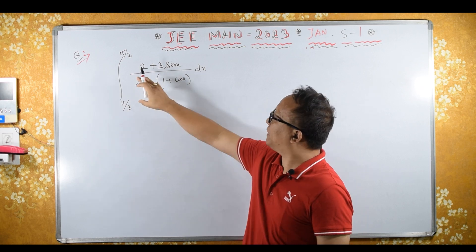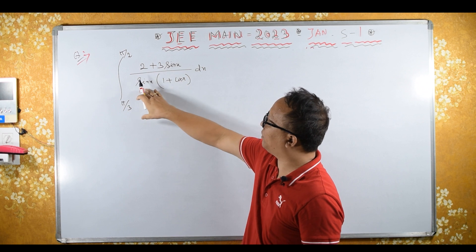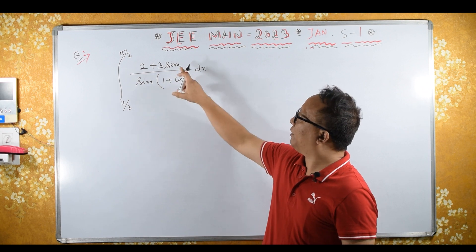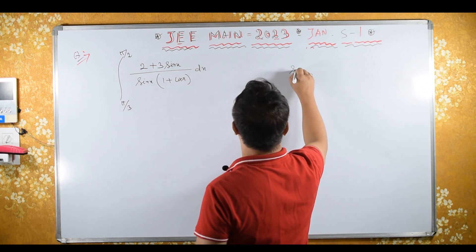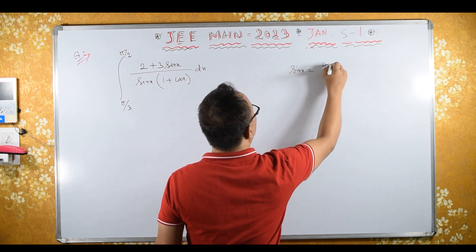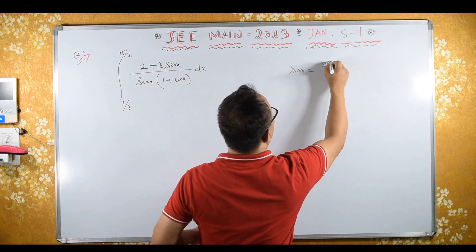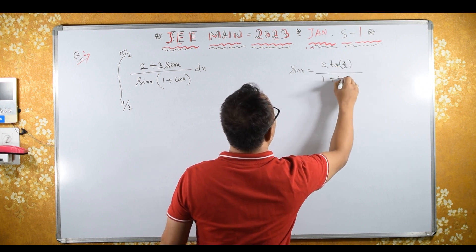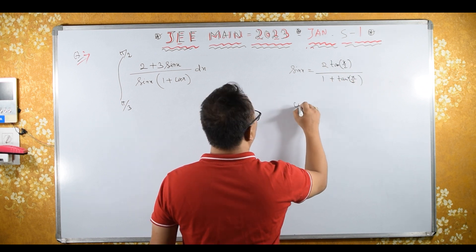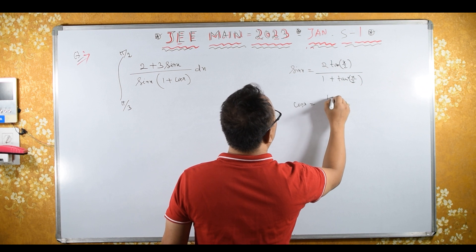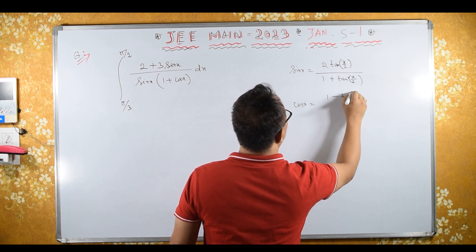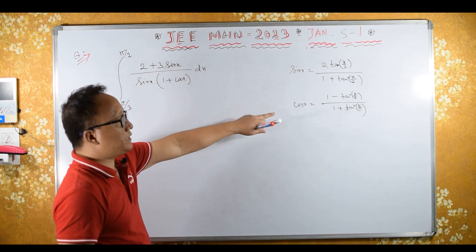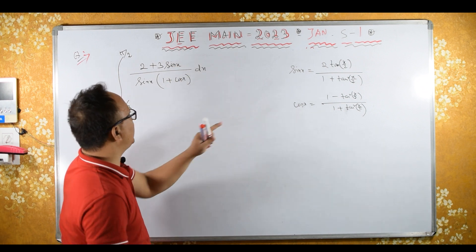This integral I already solved by separating using partial fractions, which is a lengthy method. Now I will solve it a different way by substituting using the half angle formula: sin x equals 2 tan(x/2) upon 1 plus tan²(x/2), and cos x equals 1 minus tan²(x/2) upon 1 plus tan²(x/2). Now let's substitute these half angle formulas instead of sin x and cos x.